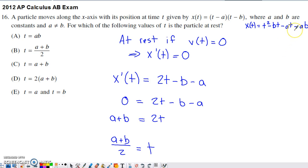So I set this equal to zero and solve for t. I can add the a and the b to the other side, I can divide by two, and I end up with option B.